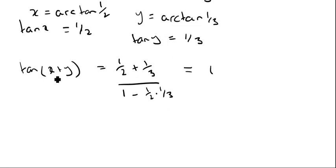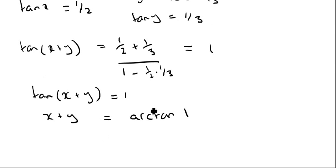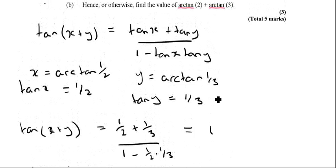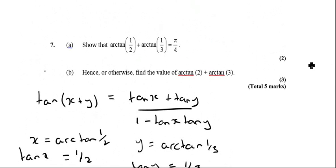So therefore, if we want to find what x plus y is equal to, if we know that tan(x+y) equals 1, then x plus y equals arctan(1), and arctan(1) is π/4. That's quite a lot of work just for two marks.